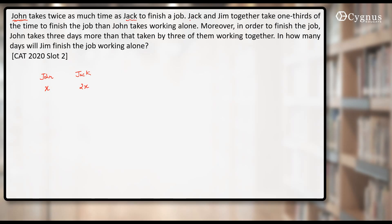What are the next two lines? Jack and Jim. There's one more person, Jim. Jack and Jim together take one third of a time to finish the job then John takes working alone. Now, these two people take one third of a time. If the time is one third, I can say the work done by them in the same time will be three times.